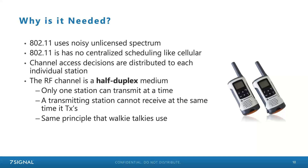We don't have a centralized scheduling algorithm the way cellular technologies do. The decision to transmit and access the channel is done independently by every client and access point operating on the channel. From that distributed decision-making, we get an emergent order that makes it look like there's centralized coordination, but there really isn't. The big challenge is that the channel is half duplex — only one station can transmit at a time, and when you're transmitting, you can't hear yourself, so you don't know if someone else transmitted simultaneously and corrupted your message.